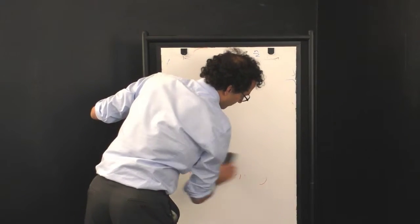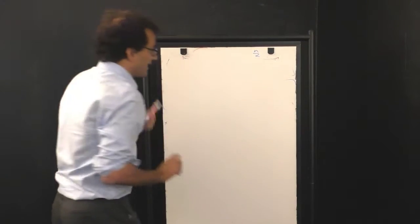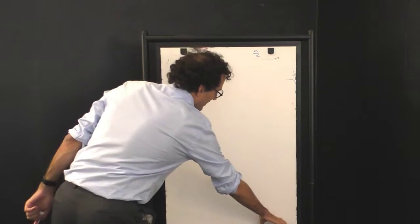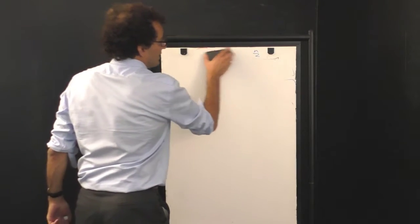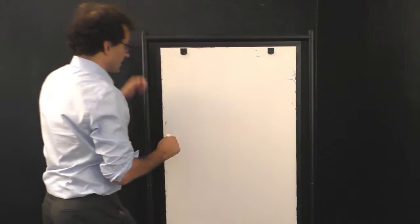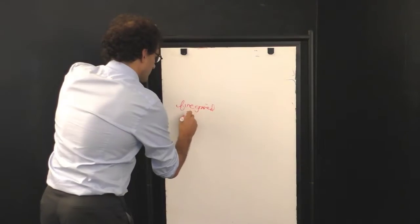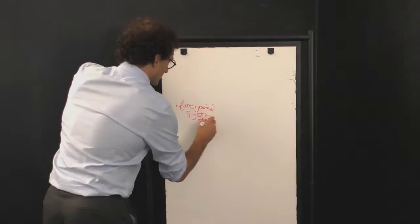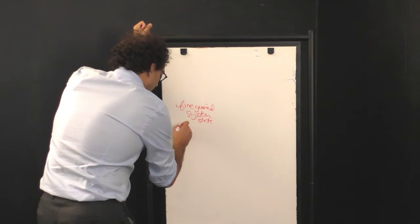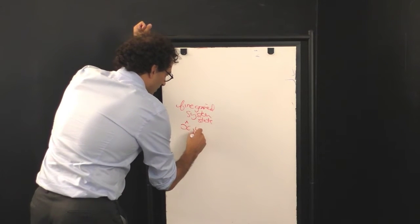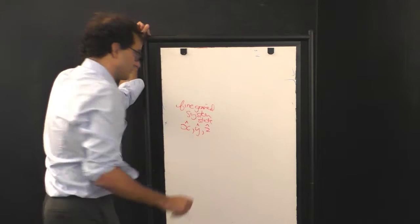So, we can think about these two different operations on a diagram that you can imagine is sometimes called a commuting diagram. Down here, we have the fine-grained system state specified by three variables, x-hat, y-hat, and z-hat.